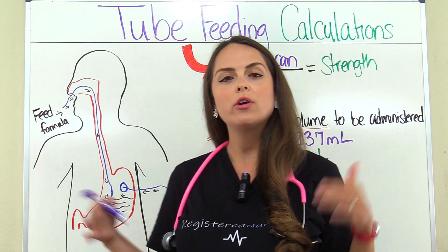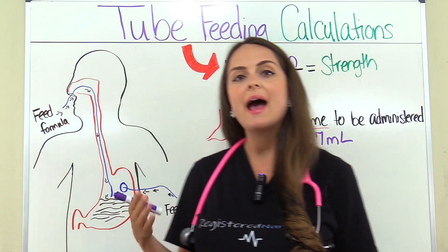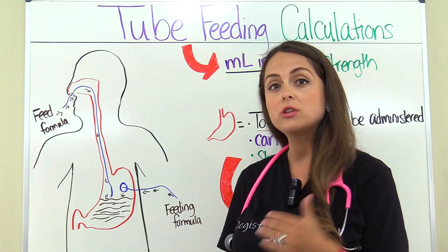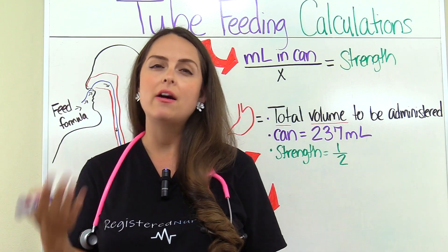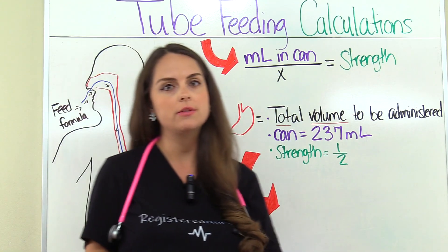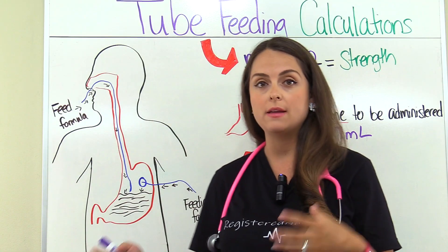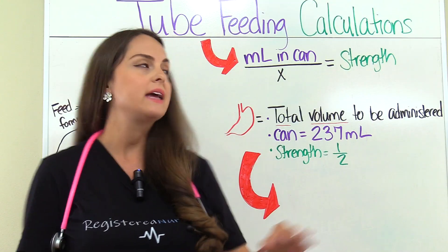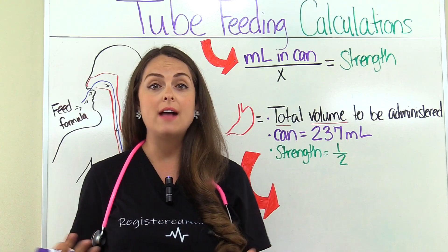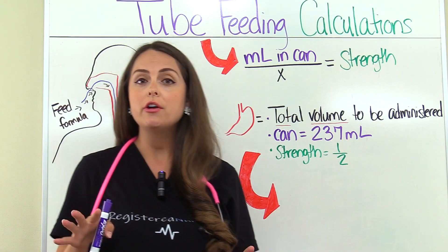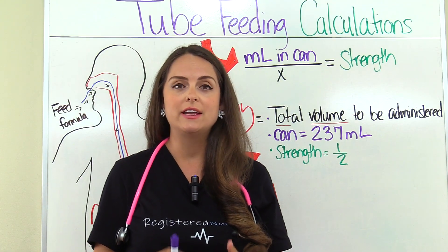In this calculations video, we're going to solve different types of tube feeding problems you may encounter on your exam. I'm going to walk you step by step how to solve problems that require you to figure out how much water is needed to dilute the feeding formula, along with how to calculate the total volume to administer to the patient, and how much time it will take. We're going to be using a specific formula and some dimensional analysis. If you're not familiar with dimensional analysis, I really recommend you check out the other videos in this dosage and calculation series.